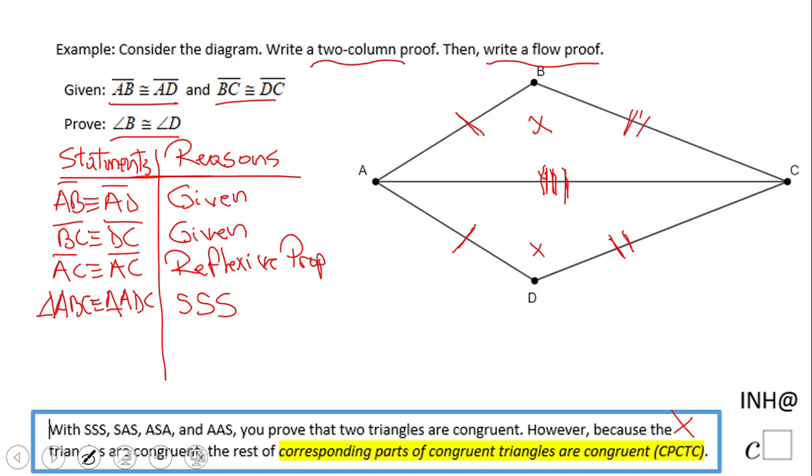Now we're going to use this statement that you see down here on the bottom: corresponding parts of congruent triangles are congruent. If these two triangles are congruent, the other parts of the triangles are congruent. So in this case we're going to say angle B congruent to angle D because corresponding parts of congruent triangles are congruent. Very important statement in a proof.